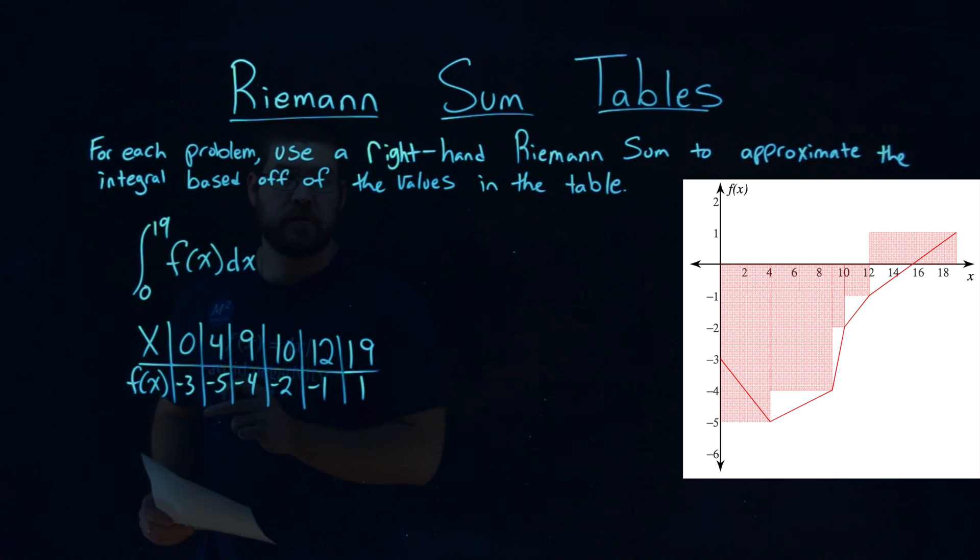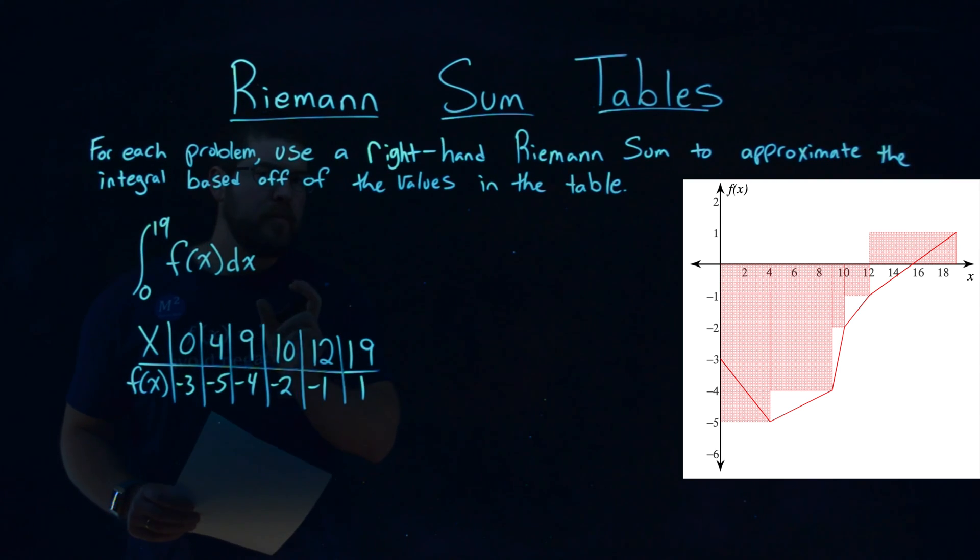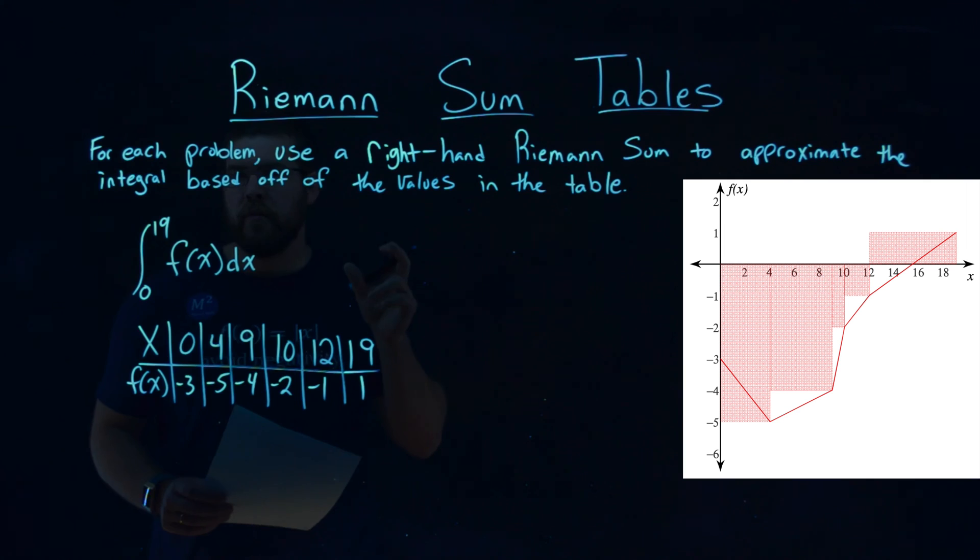So first thing I want to do is, I see my x values right here, and they represent the base parts of each rectangle. And so I want to find the width of each rectangle, the difference between each x value.